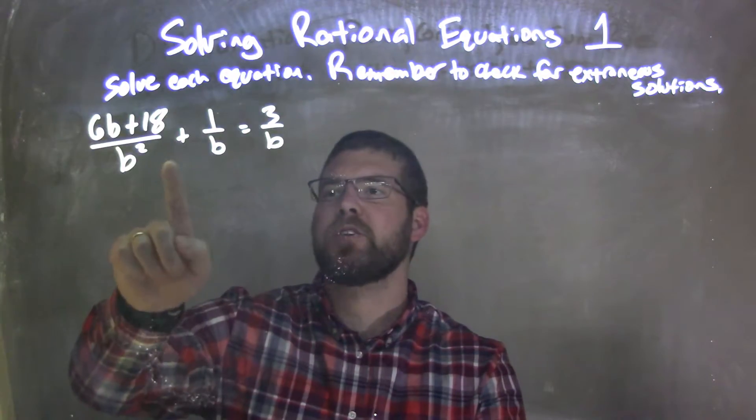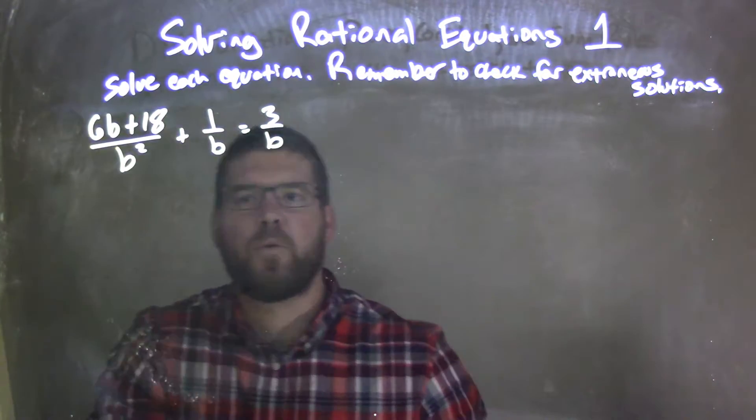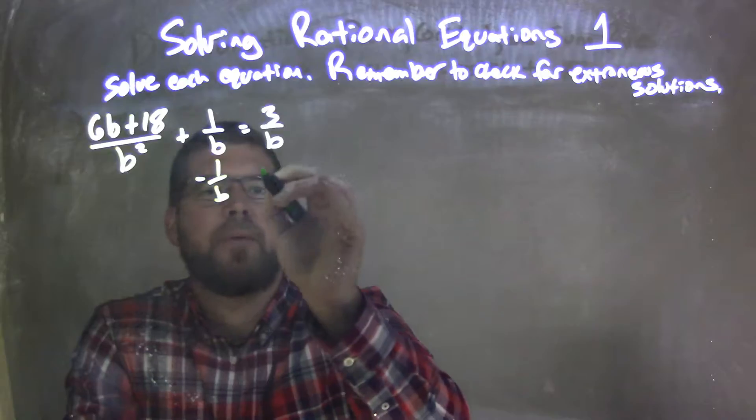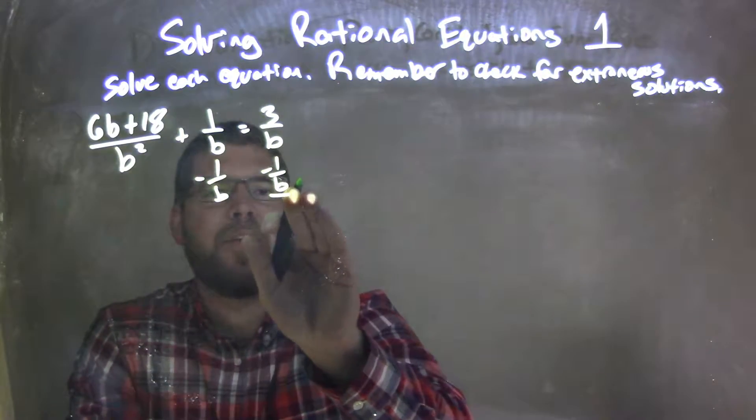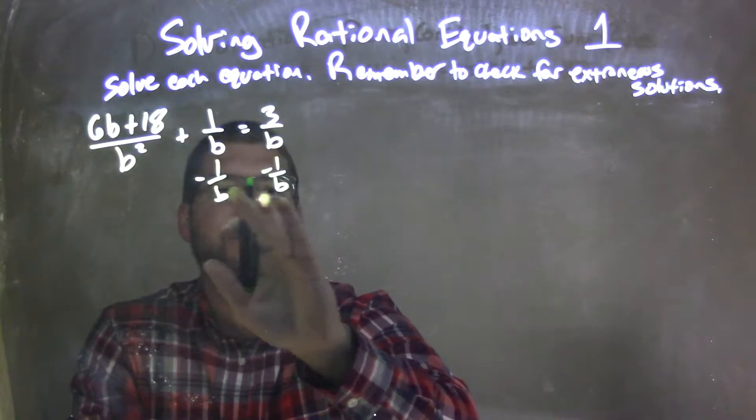Well, first thing I'm going to do is bring this 1 over b to the right. So I'm going to subtract 1 over b there. And in doing so, I guess I'm not going to write it like that. I don't want the fraction like that, it would be a little confusing there.